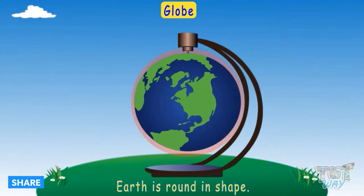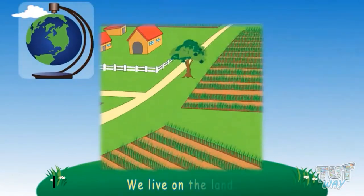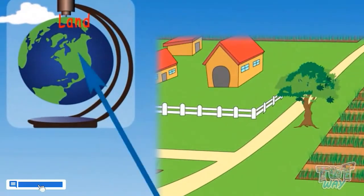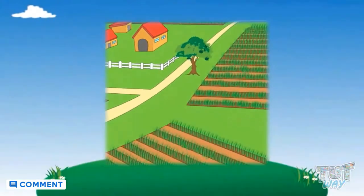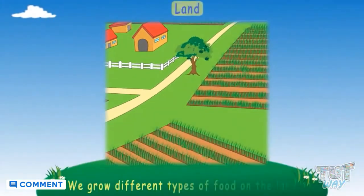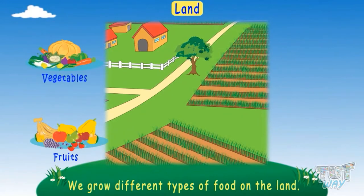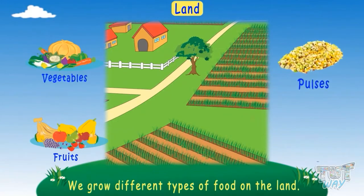Earth is round in shape, and we live on the land. We grow different types of food on the land, like fruits, vegetables, pulses, and grains.